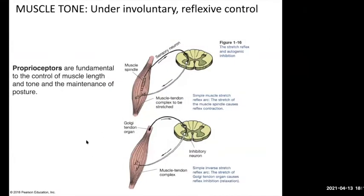Let's go back to how we actually control muscle tone. You're not consciously maintaining it — your brain has other things to worry about. All that muscle tone is under involuntary reflexive control. This chapter doesn't go into this much — it goes within the nervous system. Going back to earlier lectures, we talked about receptors picking up stimuli, sending them through afferent fibers to a control center, and then out through efferent fibers to the effector.